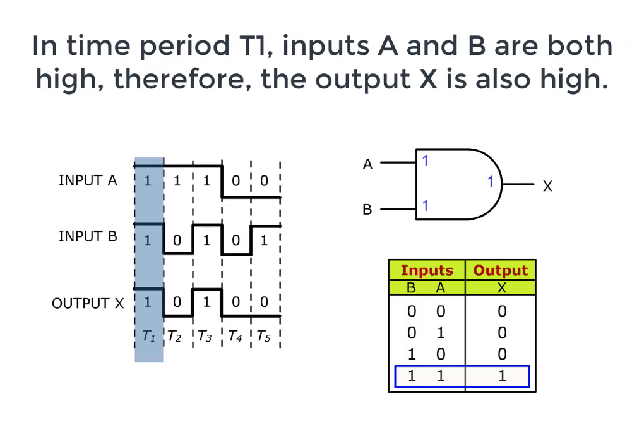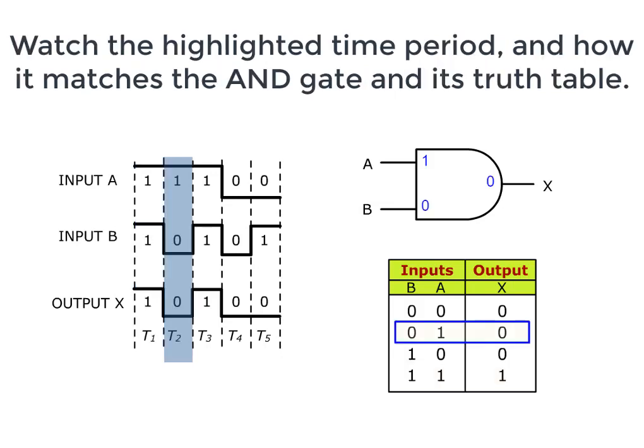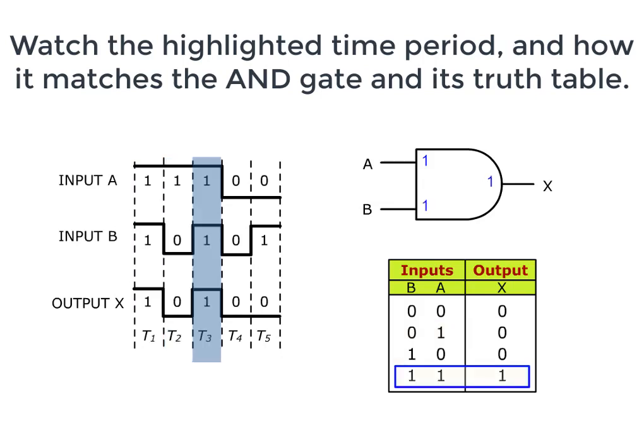In time period T1, inputs A and B are both high. Therefore, the output X is also high. Watch the highlighted time period and how it matches the AND gate and its truth table. Notice how the output X is high only when inputs A and B are both also high.